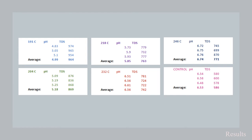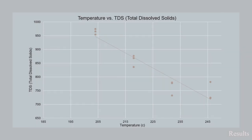However, the total dissolved solids trend is quite different. In fact, the total dissolved solids started at almost 1,000 and went all the way down to 771, with one outlier group that dipped all the way to 742. This graph illustrates that as temperature increases, the total dissolved solid levels decreased.